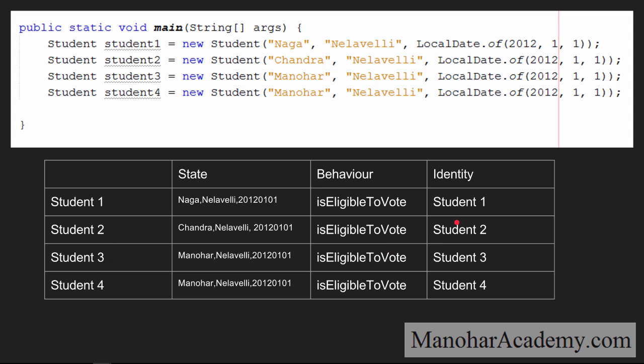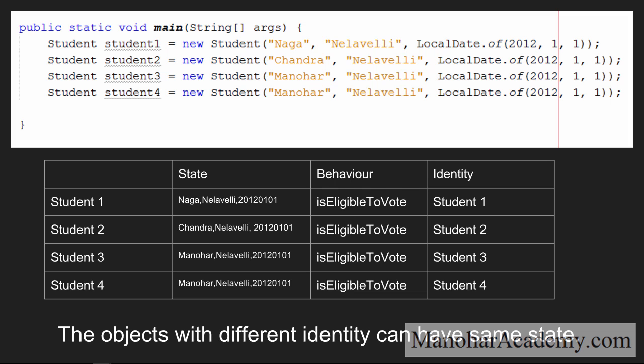Coming to identity — we clearly know that we have four students: student 1, student 2, student 3, and student 4. Even though the state is same for student 3 and student 4, they are still different objects. To really appreciate this: in your class you have twins — they have the same date of birth, the same last name, and for some reason the same first name. Even though they have the same first name, last name, birthday, height, and look exactly the same, they are still two different persons. They have different identity — their own identity.